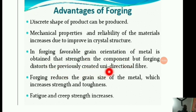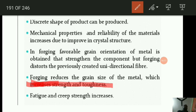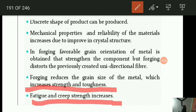Forging reduces the grain size of the metal, which increases strength. Forging helps in increasing strength and toughness — that is very important for MCQs. As a side effect, fatigue and creep strength also increase. So you get a double benefit from the forging operation: strength and toughness increase, and fatigue and creep strength also increase, giving a very durable material.